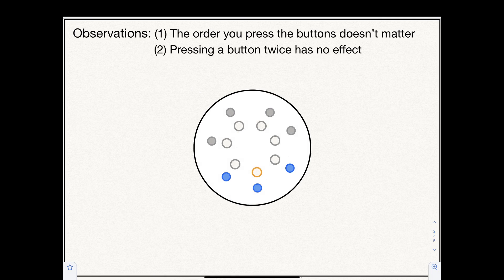The second observation is that pressing a button twice has no effect. So you only need to hit each button at most once. This is a consequence of the order not mattering.